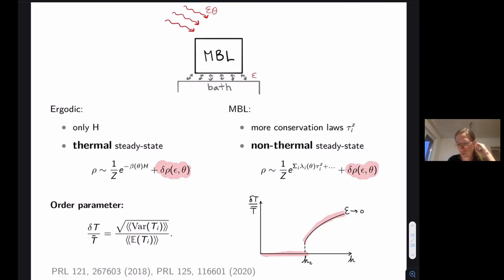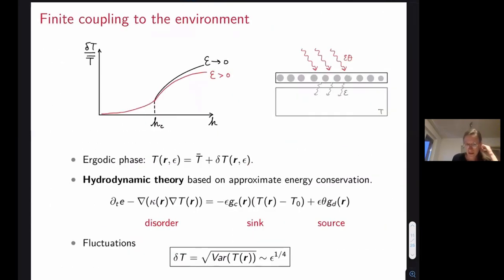However, as we figured out as we continue to work on this problem, when we take a finite coupling to driving and to bath, these corrections on top of the Gibbs or some sort of generalized Gibbs ensemble play a very important role. Let us try to sort of anticipate what will happen as a consequence of a finite coupling to the environment.